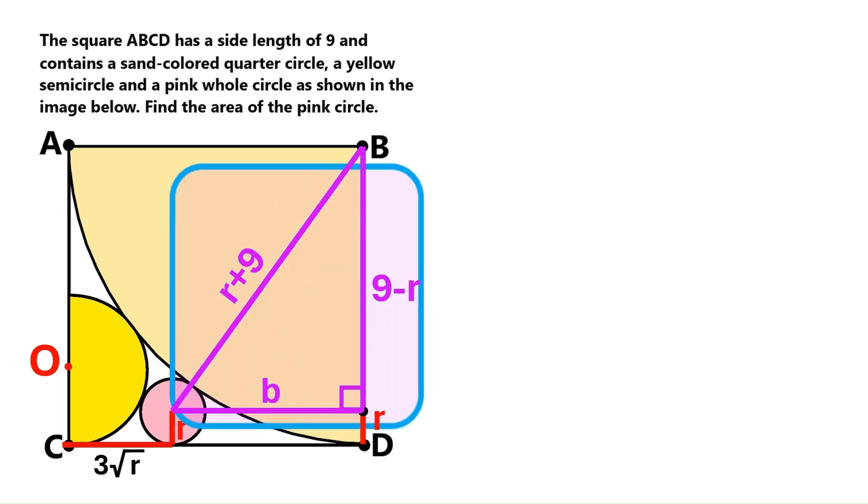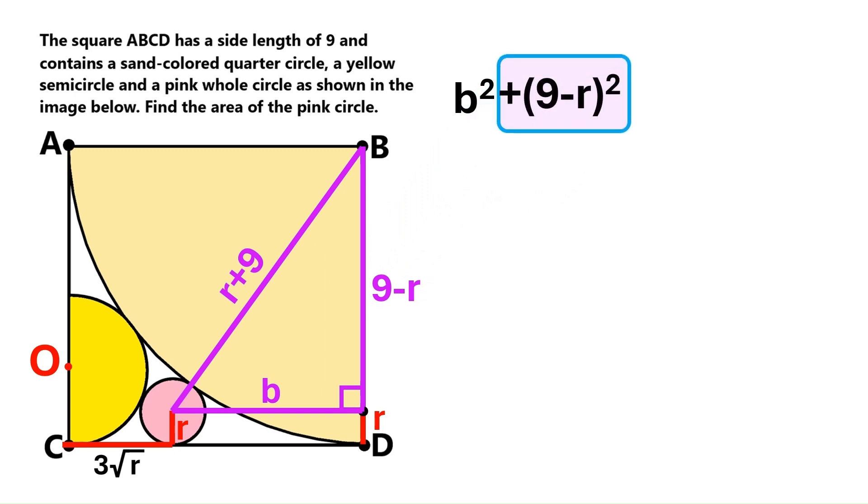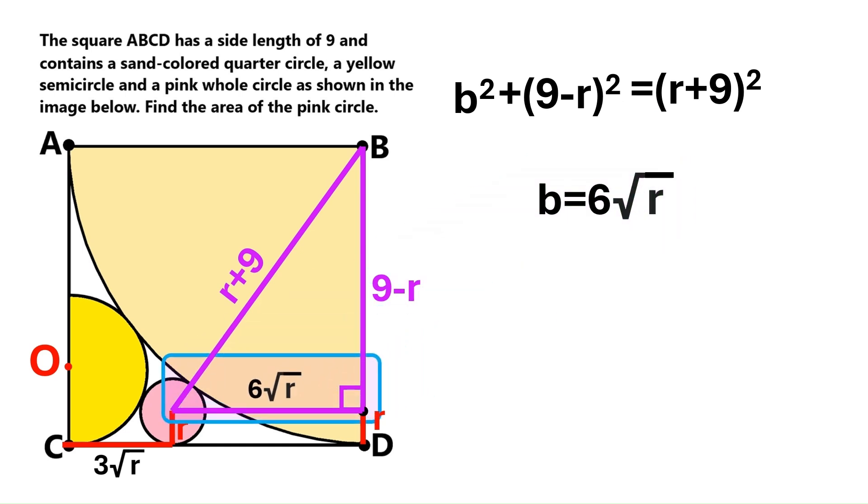This purple triangle is a right triangle. So we can resort to the Pythagorean theorem once more. Here is leg 1. We take its square. Here is leg 2. We take its square too. This is the hypotenuse. You guessed right, we'll take its square. Let's cut to the point. The equation leads us to the conclusion that B is 6 times the square root of R. Let's put that down here. This distance will also be 6 times the square root of R. We've also got 3 times the square root of R over here.